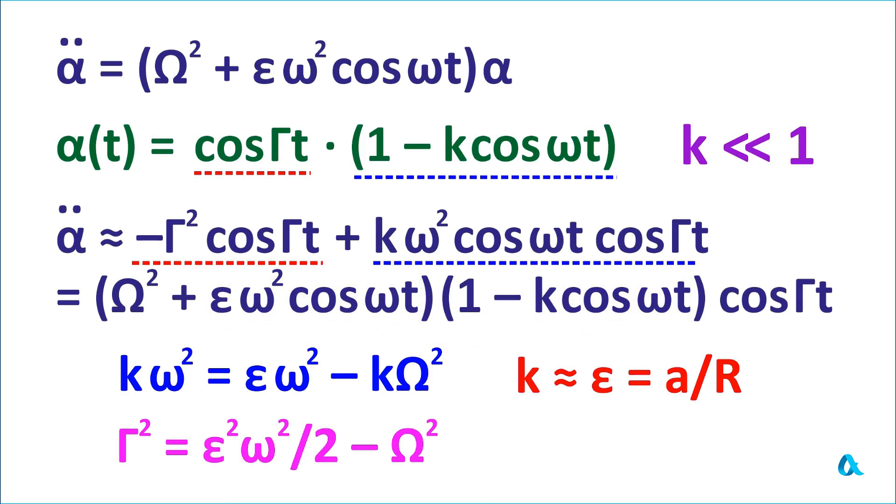I would like to note that γ² here can be either greater than or less than zero. The second case leads to exponentially increasing instability. And the boundary between these two modes corresponds to γ equal to zero. From this, I obtain the critical value ε*, which is the square root of 2Ω divided by ω, again a small parameter.